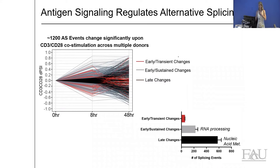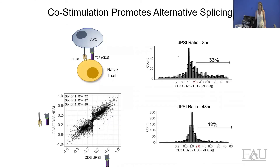These splicing changes fall into different functional categories. Genes that change splicing most rapidly upon T-cell activation are those involved in RNA processing, whereas genes exhibiting later changes in splicing more closely relate to metabolism and especially nucleic acid metabolism. This is likely consistent with the rapid need for changes in gene expression — hence RNA processing first — followed by longer-term need for increased proliferation, requiring more nucleotides, DNA, and RNA for replication and overall gene expression.